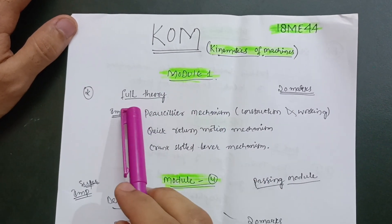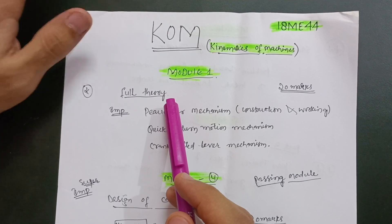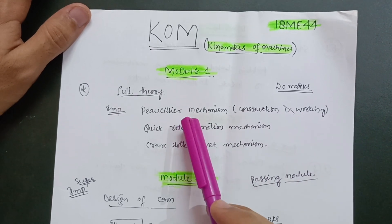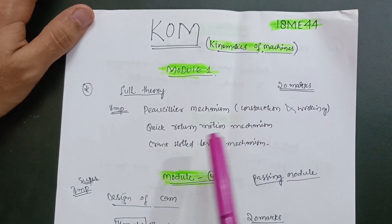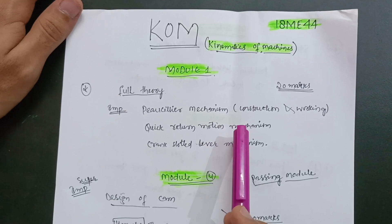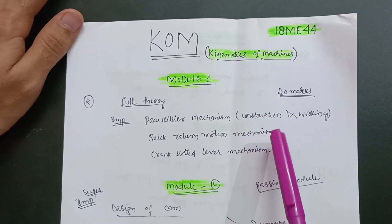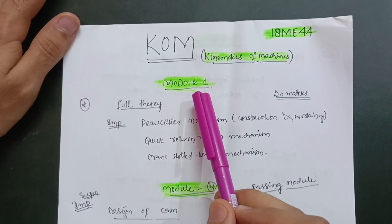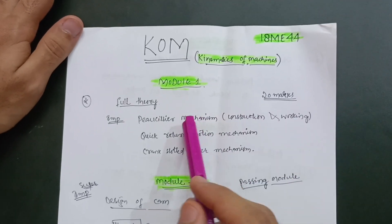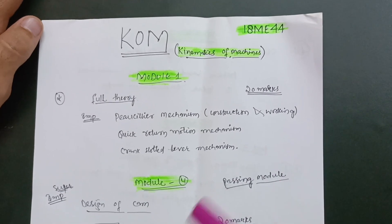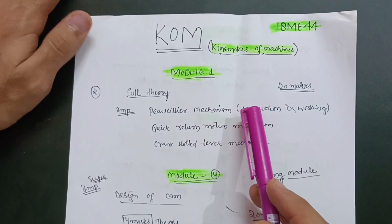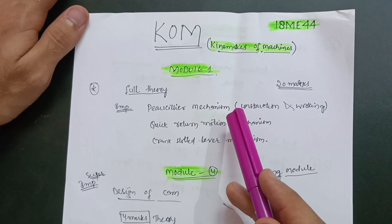In the first module, you have to prepare full theory as much as possible. If not full theory, at least prepare the peculiar mechanism construction and working, and the quick return motion mechanism including the crank slotted lever mechanism. These are the important theory concepts in module 1. Go through the full theory so that you can easily score 20 marks. Module 1 is a passing module.